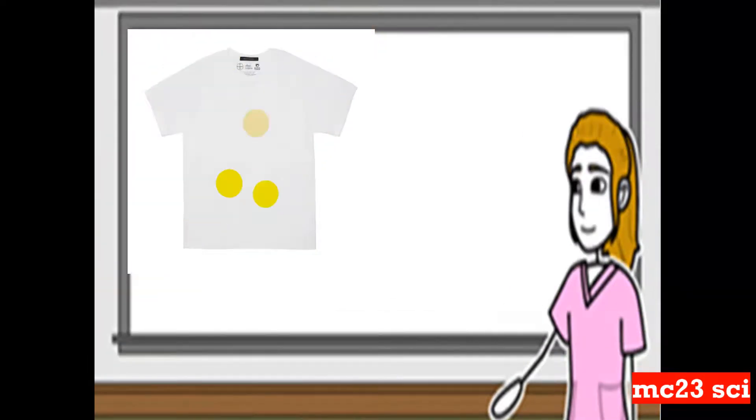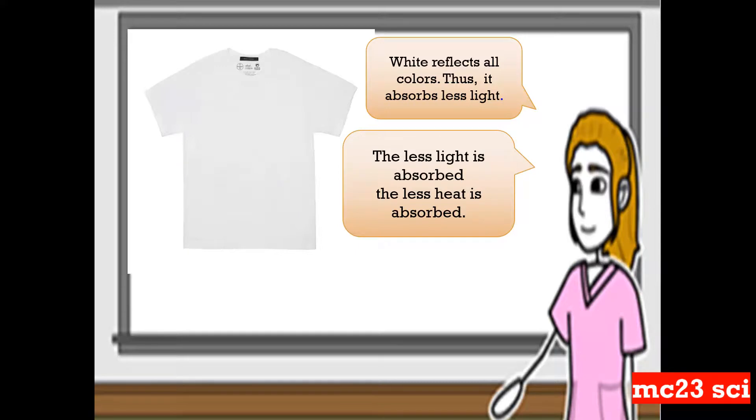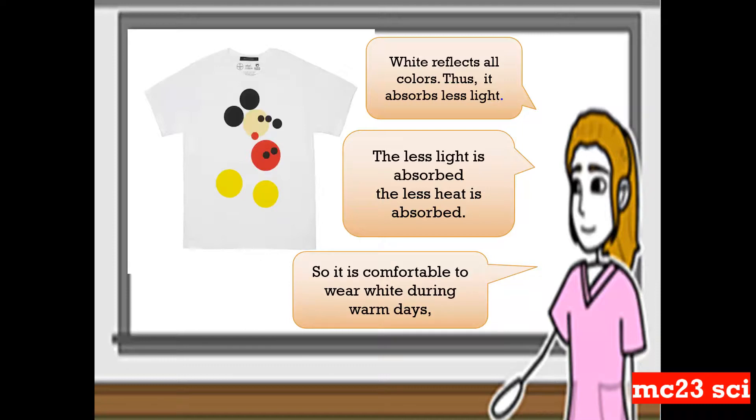Take a look at the white shirt. White reflects all colors, so it absorbs less light. The less light is absorbed, the less heat is absorbed. So it is comfortable to wear during warm days.